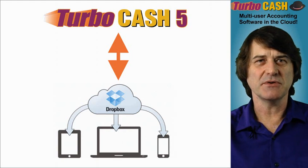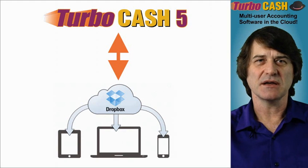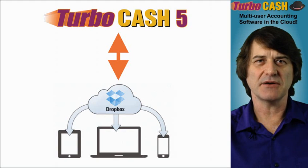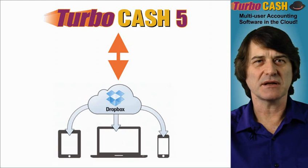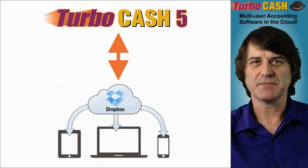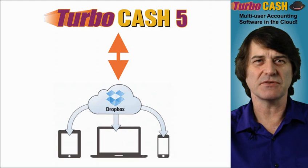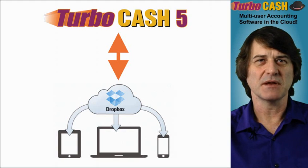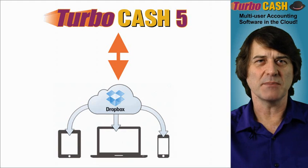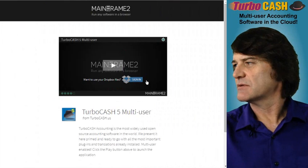What you end up doing with the TurboCache system is saving data onto your Dropbox in the cloud, and it automatically appears on your local disk. This is useful for things like PDF files or uploading logo files, that sort of thing.